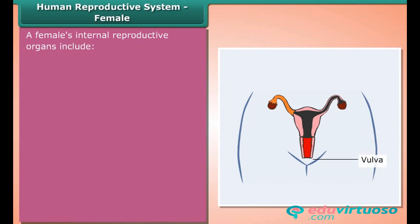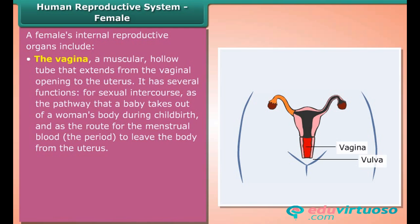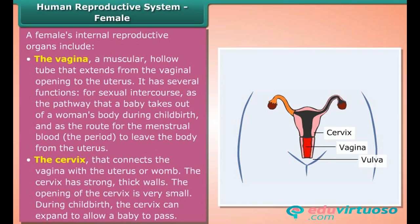A female's internal reproductive organs include the vagina, a muscular hollow tube that extends from the vaginal opening to the uterus. It serves several functions: for sexual intercourse, as the pathway that a baby takes out of a woman's body during childbirth, and as the route for menstrual blood to leave the body from the uterus. The cervix connects the vagina with the uterus or womb and has strong, thick walls.